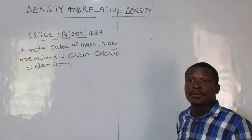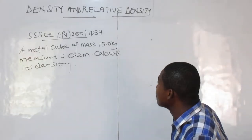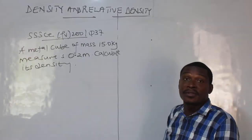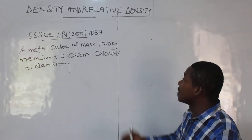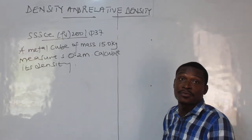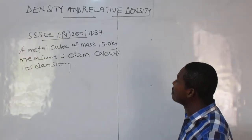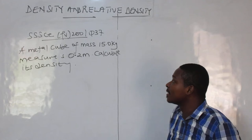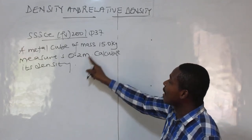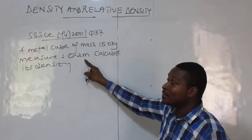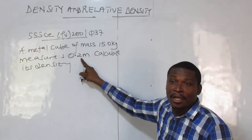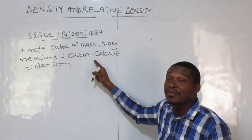Now, this is for non-science students or what you call integrated science. Now let's look at that. We have the same things in pure physics too. Now a metal cube of mass 15 kilogram measures 0.2 meter. Calculate the density. I have the mass. I need a volume. This cannot be a volume. I told you a volume term should be meter cubed or cm cubed.